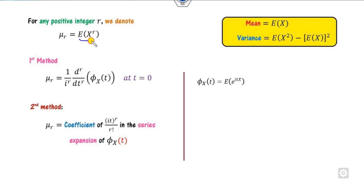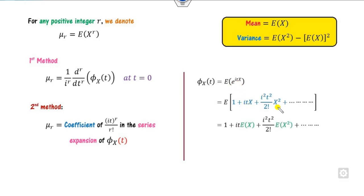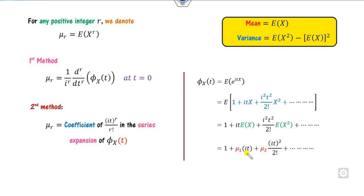The second method is to expand the characteristic function as a power series in iota·t. Opening the exponential, we see that mu_1 is the coefficient of (iota·t)^1 / 1!, and mu_2 is the coefficient of (iota·t)^2 / 2!, and so on. We will see both methods applied in the following examples.